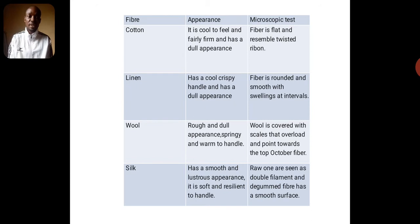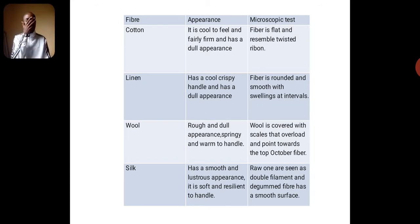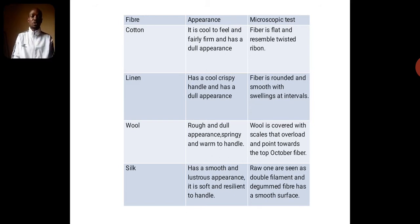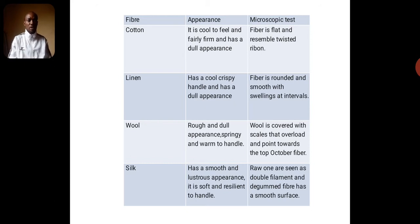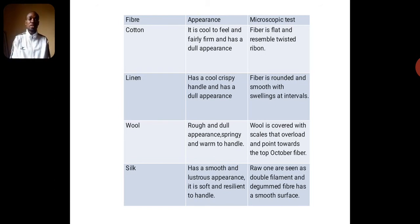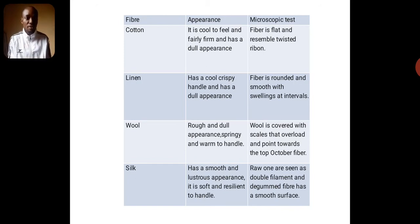Linen in appearance has a cool, crispy handle and also has a dull appearance. It is slightly different from cotton — crispy and dull in appearance. When viewed under a microscope, linen fiber is rounded and smooth with swellings or nodes (N-O-D-E-S) at intervals — like knots at intervals — it appears rounded with smooth swellings at intervals.